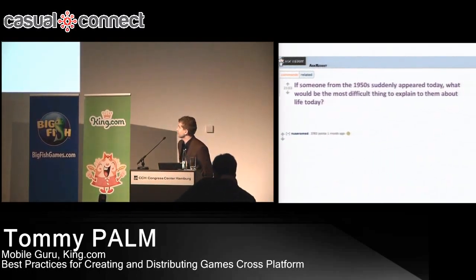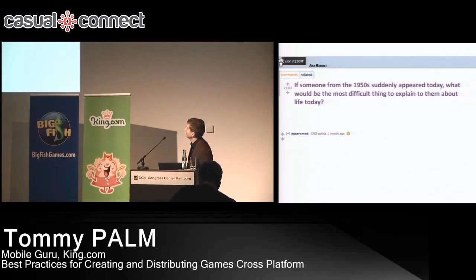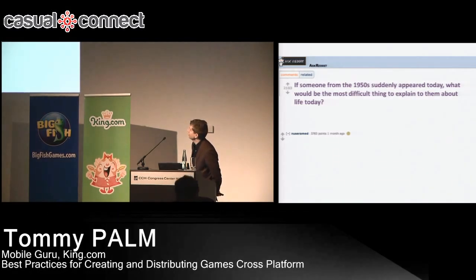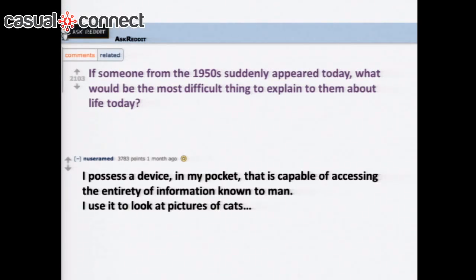I saw this great quote on Reddit. It's a Q&A asking: if somebody from the 1950s suddenly appeared today, what would be the most difficult thing to explain to them about life today? And the most popular answer is: I possess a device in my pocket that is capable of accessing the entirety of information known to man. I use it to look at pictures of cats.